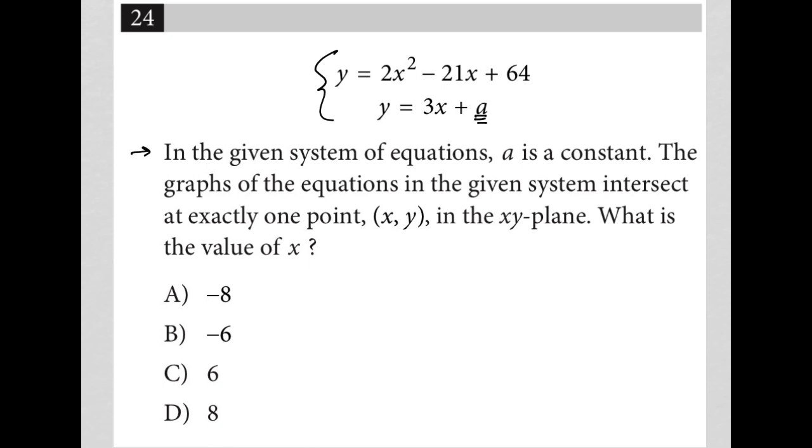The graphs of the equations in the given system intersect at exactly one point, so that's very important. Why is that important? Well, that catches my eye because this first equation is actually a quadratic equation, which means it's going to be a parabola. And then the second equation is a linear equation, which means it's going to be a line.